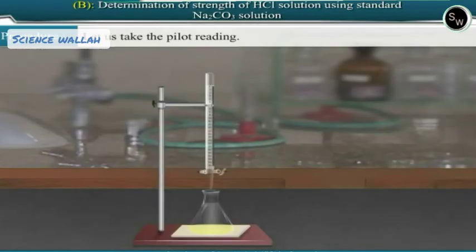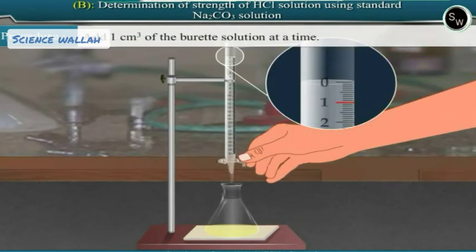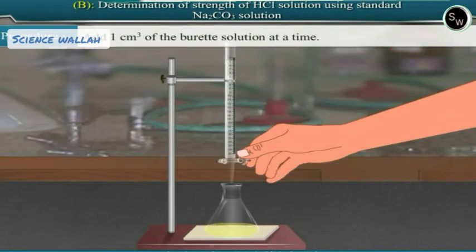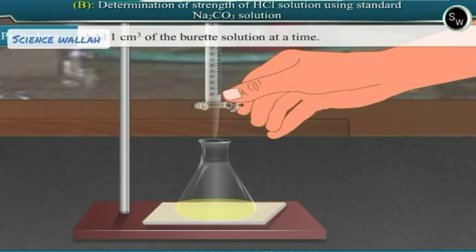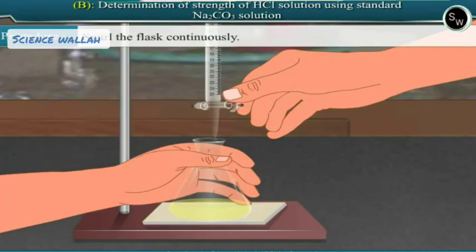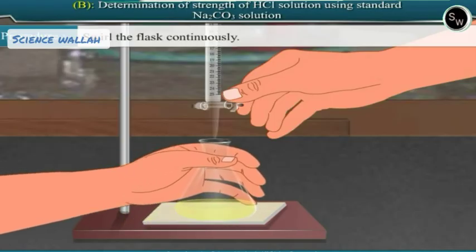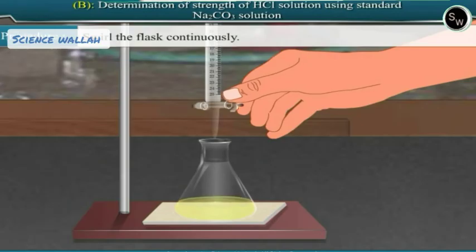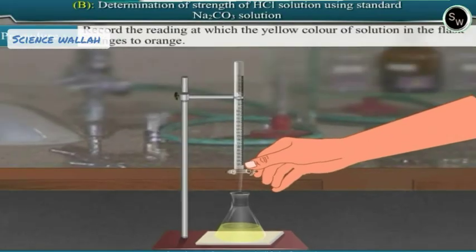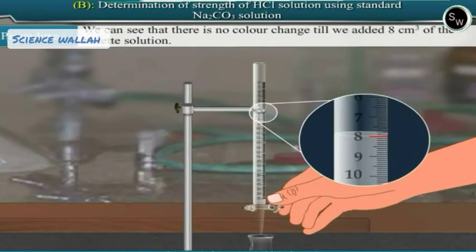Let us take the pilot reading. Add 1 cm³ of the burette solution at a time, swirling the flask continuously. Record the reading at which the yellow color of the solution in the flask changes to orange.